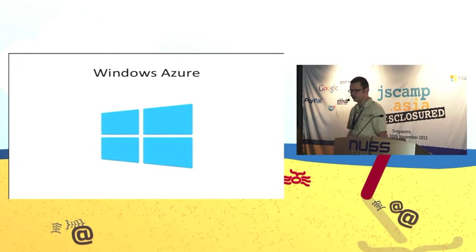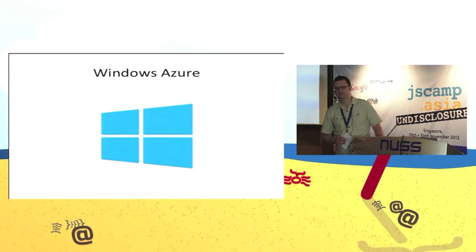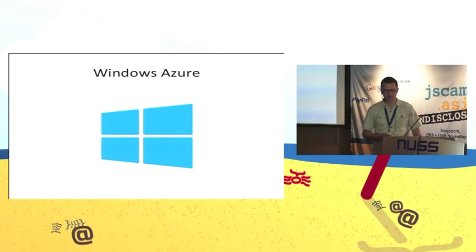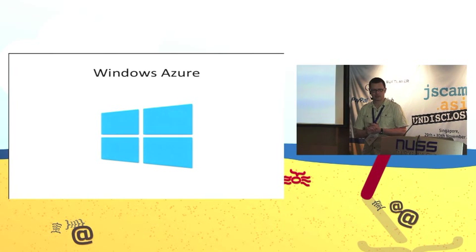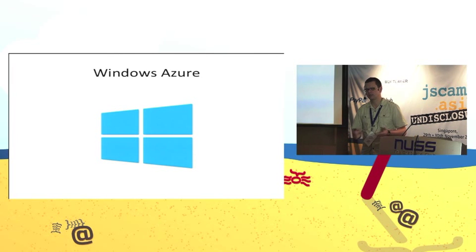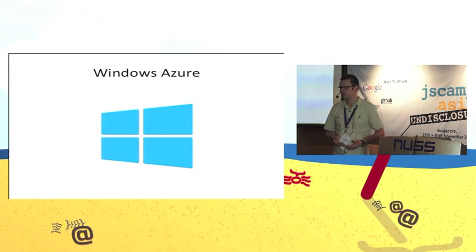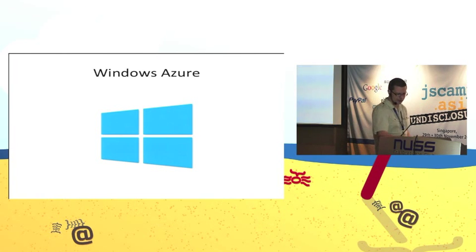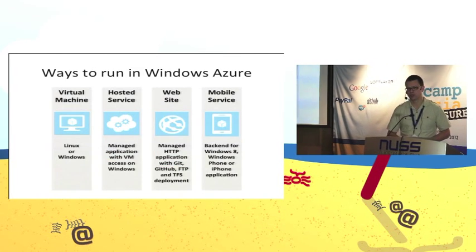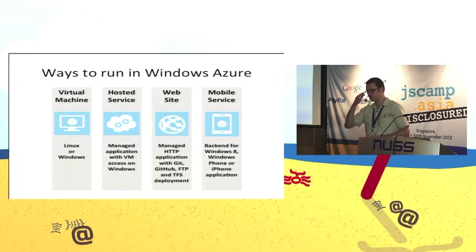Let's switch gears and talk about Windows Azure. Windows Azure is a hosting environment operated by Microsoft with several data centers around the world, which allows you to run applications written in .NET, Python, PHP, and Node.js. There are four ways you can run Node.js code in Windows Azure.